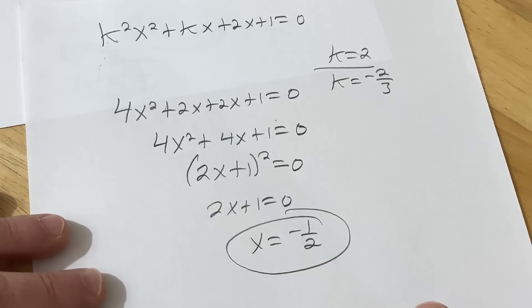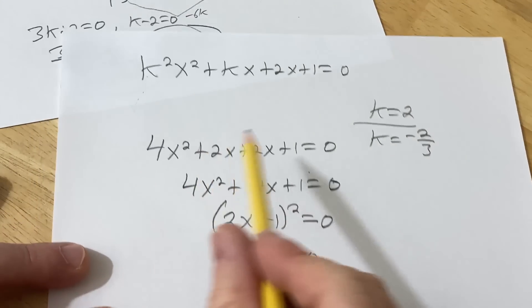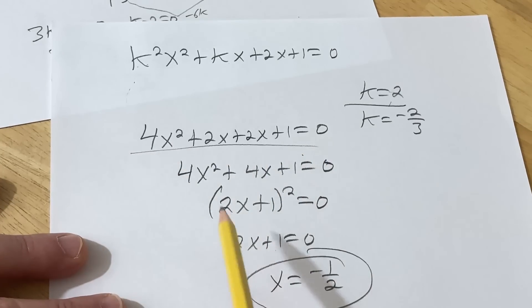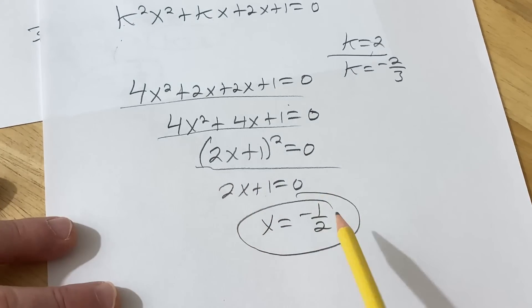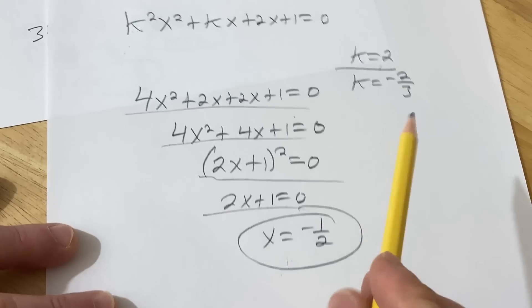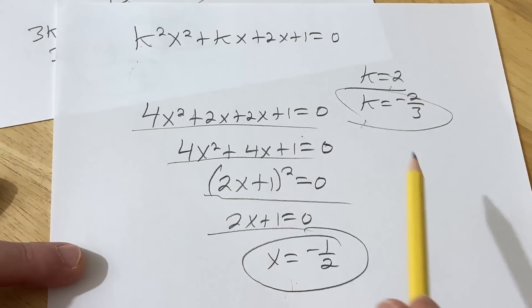If you solve this, you basically get this, and that gives you this. Boom. Subtracting 1, dividing by 2, and you end up with that. So yes, this plugging in 2 gives you this equation, which simplifies to this, which factors this way, which gives you that, which gives you that as the answer. Pretty cool. And something similar should happen with negative 2 thirds.